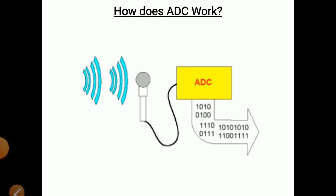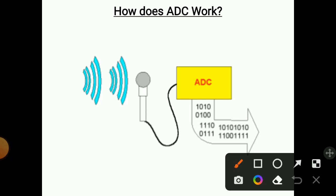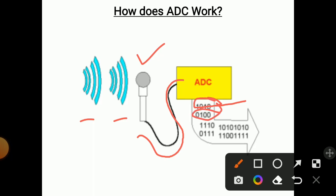There is one microphone shown. This microphone receives sound waves and converts them into analog form. The analog signal is transmitted through a wire to the analog to digital converter. This analog to digital converter converts each analog signal into the respective digital form — for example, 1010 or 010. Each analog signal is converted into digital numbers. This is called analog to digital conversion.